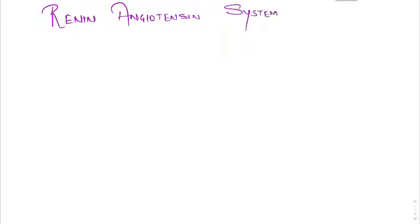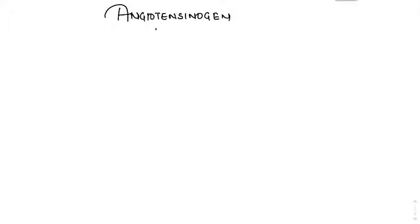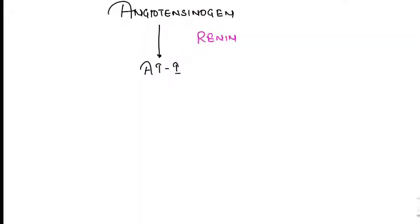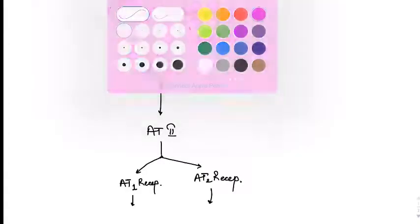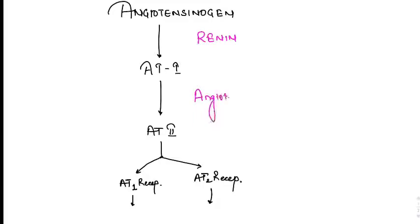Today we will be studying about a very important topic: the renin-angiotensin system. Angiotensinogen is converted to angiotensin 1 in the presence of the enzyme renin. Then angiotensin 1 is converted to angiotensin 2, which is the main active hormone. Angiotensin 1 and angiotensin 2 are converted in the presence of angiotensin-converting enzyme (ACE).